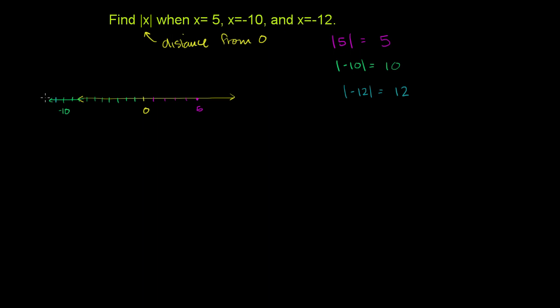And we could draw it over here. This is negative 11. Negative 12 is right over here. It is 1, 2, 3, 4, 5, 6, 7, 8, 9, 10, 11, 12 away from 0.